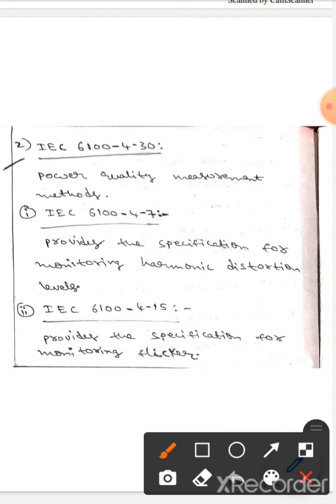The next one is IEEE 6100430. Here power quality measurement methods will be provided. IEEE 610047 provides the specifications for monitoring harmonic distortion levels.